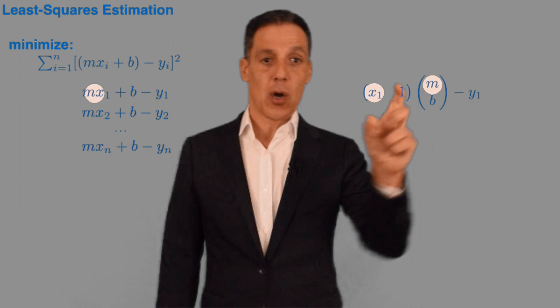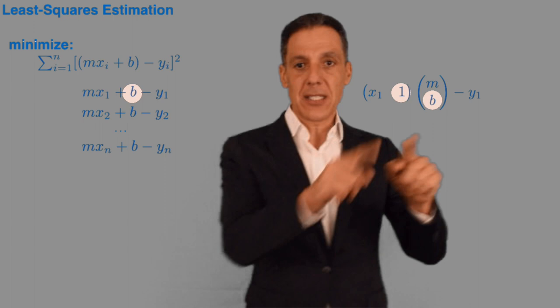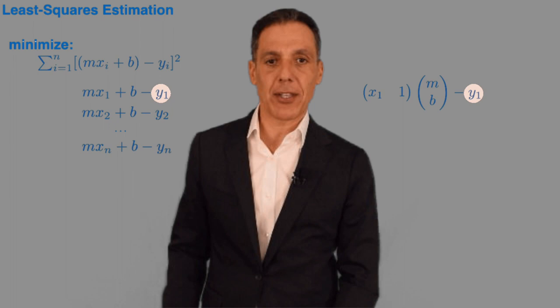Now let's make sure we see why these are equivalent. Let's do the vector multiplication. So it's row times column. So it's M times x1. There it is right there. Plus B times 1. There it is right there. And then of course just minus Y1. So this little guy right here is equal to that little guy. Algebra. Linear algebra. Nothing complicated. We've done that before.